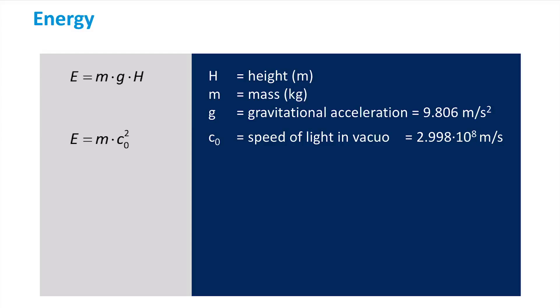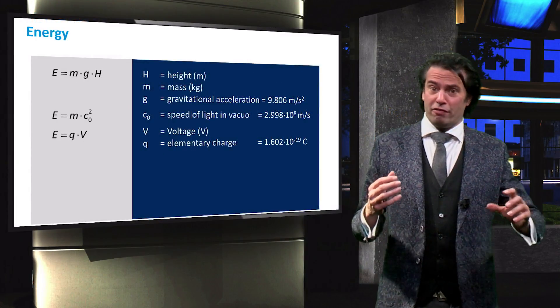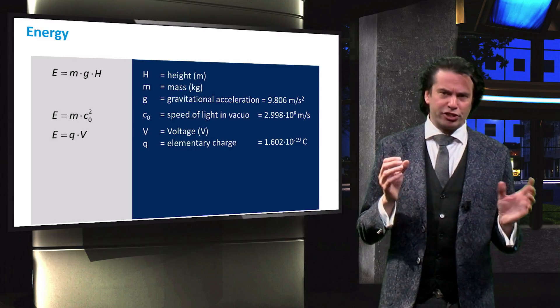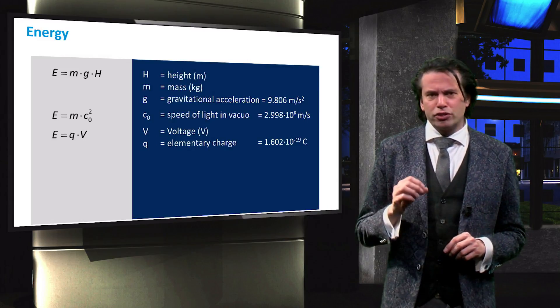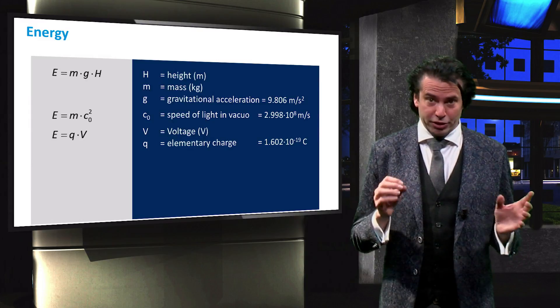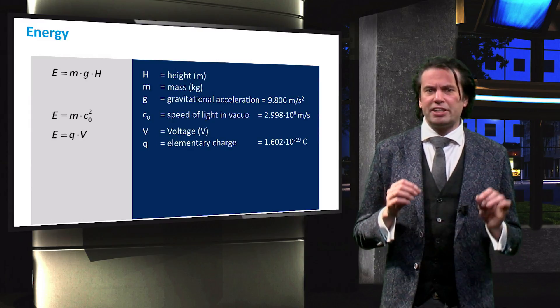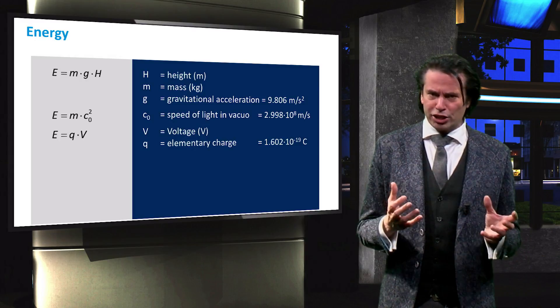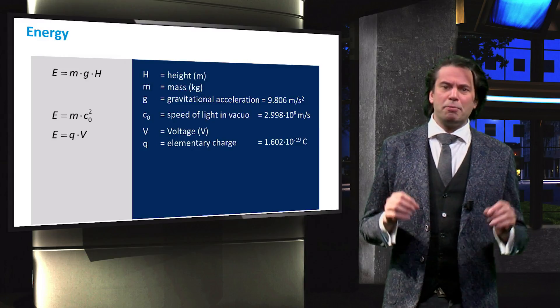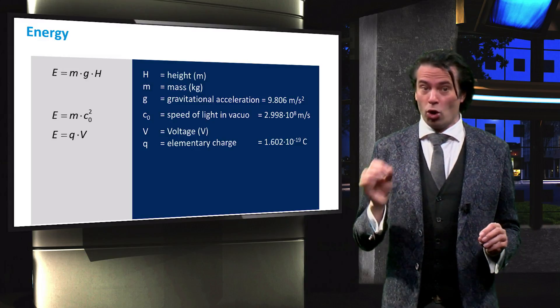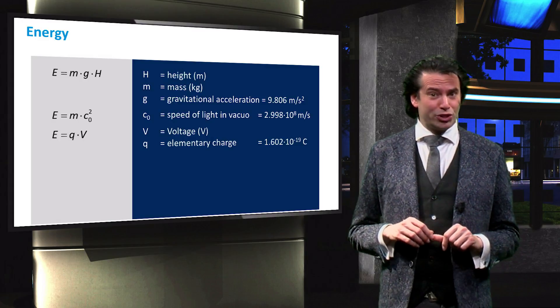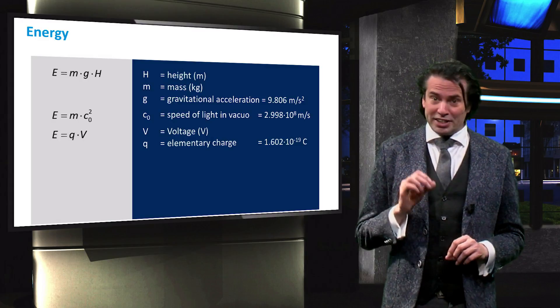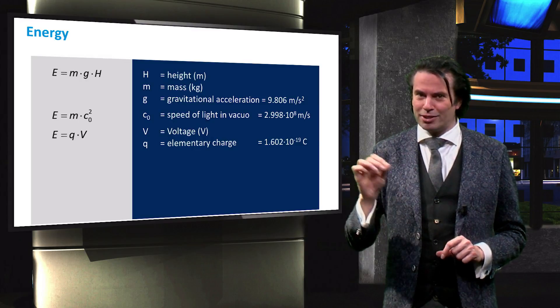According to Einstein's famous equation, energy and mass are also interchangeable through the speed of light in vacuo, denoted by c0. The energy contained in a voltage, which is a difference in electric potential charge, is related through the elementary charge, denoted by q. The elementary charge is the charge of a single proton or electron, which have similar charge but opposite signs. The elementary charge is expressed in Coulomb, after the French physicist Charles-Augustin de Coulomb, which is equal to an ampere times a second.